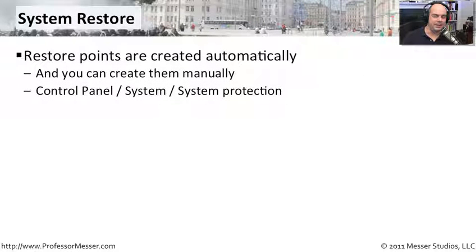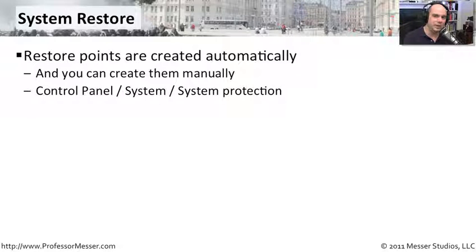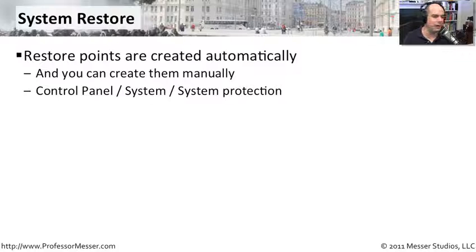System Restore is a nifty function that works behind the scenes to give you a way to roll back your system should you run into a problem. These restore points are generally created automatically when you do something big on your computer — install new software or a new driver. Windows 7 takes your current configuration, stores it, then installs the new application or driver. If something goes horribly wrong during that installation, you can simply ask Windows to restore everything from that old configuration. You can also create restore points manually.